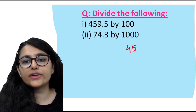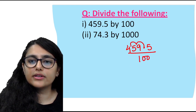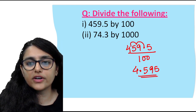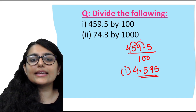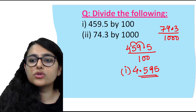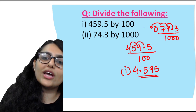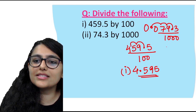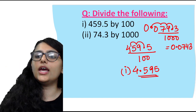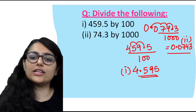Let's see more examples. First: 459.5 ÷ 100 — two places towards the left — giving 4.595. Second: 74.3 ÷ 1000 — three zeros, so 1, 2, 3 places to the left. I need to fill the empty space with 0. So my answer is 0.0743. All other digits come along and the decimal shifts 3 places to the left.